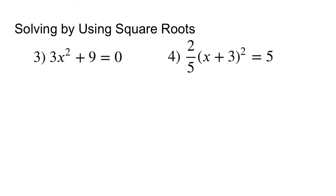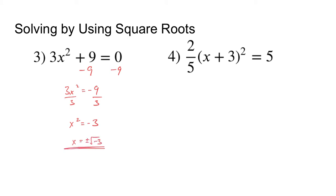Let's look at two more problems. Number 3: subtract 9 from both sides to get 3x squared equals negative 9. Divide both sides by 3, giving x squared equals negative 3. Now take the square root of both sides — but notice this is a negative square root, and that's no good. Since we can't take the square root of a negative number, problem number 3 has no solution.